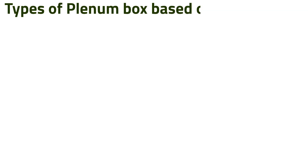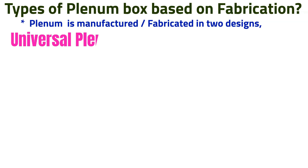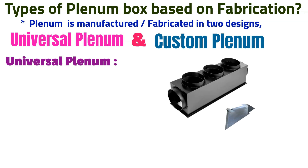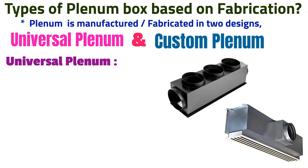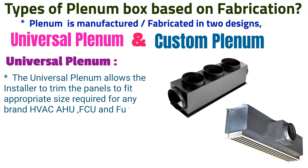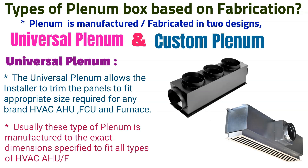Types of plenum box based on fabrication: plenum boxes are designed in two different kinds — universal design plenum and custom design plenum. The universal plenum allows the installer to trim the panels to fit the appropriate size required for any brand of HVAC air handling unit, FCU, or furnace. Usually this type of plenum is manufactured to exact dimensions specified to fit all types of HVAC air handling unit, FCU, and furnace systems.